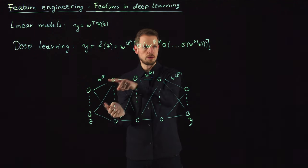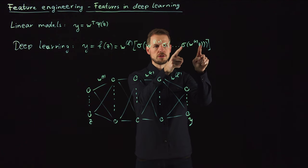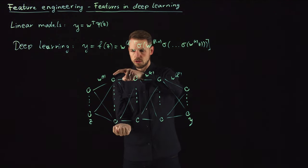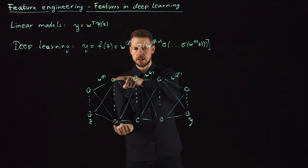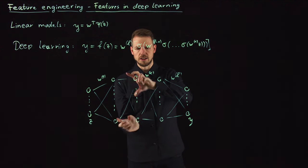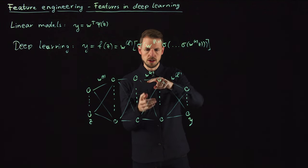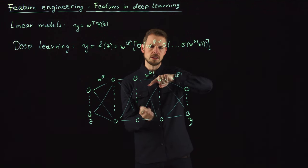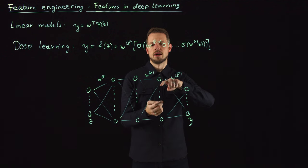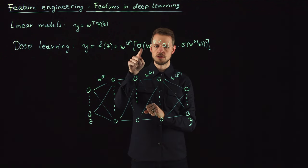Then you repeat. You apply the second weights, wrap the activation function around, do this back and forth and so on, apply the kth weight activation function until you apply the final activation function and then have your linear output layer.